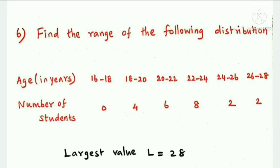Next question: find the range of the following distribution — age in years with number of students as frequency. The class intervals and frequencies are: 16 to 18: 0; 18 to 20: 4; 20 to 22: 6; 22 to 24: 8; 24 to 26: 2; 26 to 28: 2.